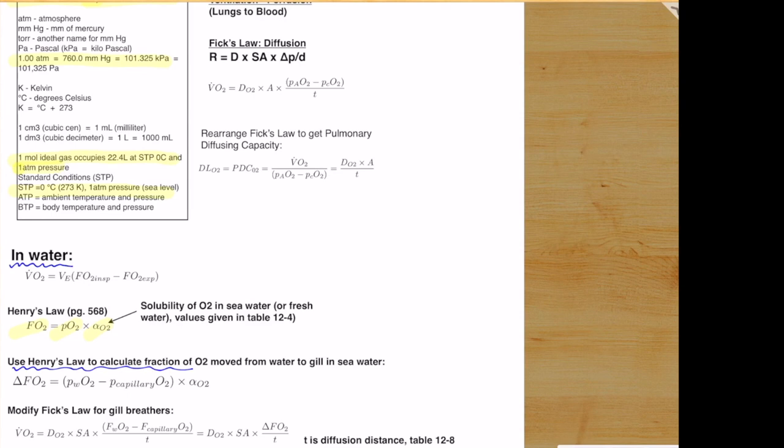We can apply the same design strategy to the gill, which is completely analogous once we convert to FO2 using Henry's law. Remember that the FO2 gradient, or the delta, is just the difference between the two FO2 values, which can then be plugged back into fixed law for gill breathers. In the fish gill design, we can solve for the surface area required. I will warn you though that there is a nasty unit conversion, but that's about it. It's no more complicated than that.